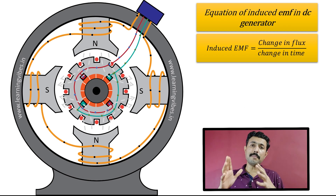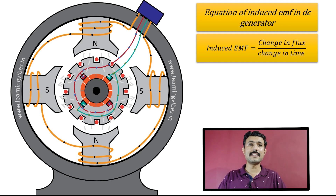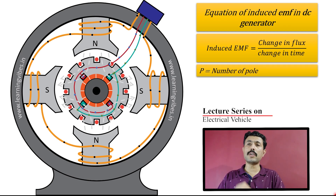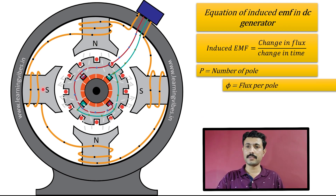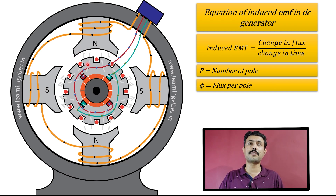Before jumping into the derivation, we need to know several parameters regarding this DC generator. The first parameter is P, which is equal to the number of poles. You can see over here it is pole 1, 2, 3, and 4 — so there are basically 4 poles. The next is Φ (phi), which is equal to flux per pole. When the current flows, some amount of flux is induced by the pole, and that flux induced by one pole is Φ, known as flux per pole.